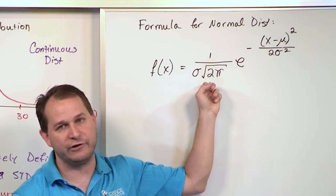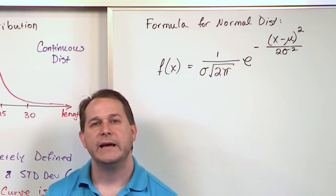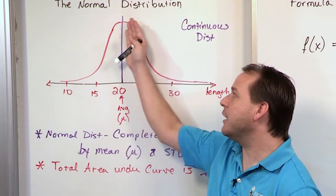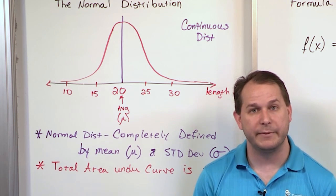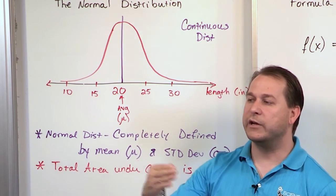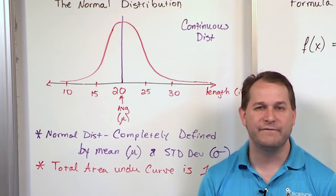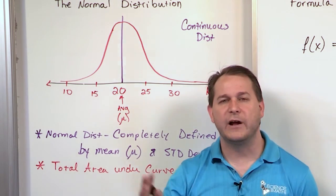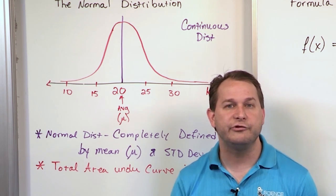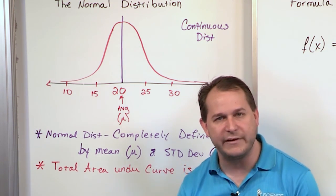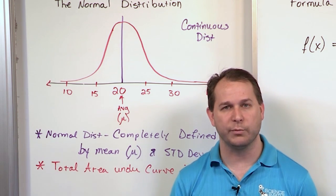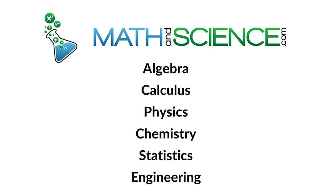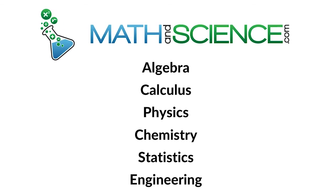So I'm showing you this equation mainly to open your eyes and show that it comes from somewhere, and to illustrate that the shape is completely locked down by the mean and standard deviation — change those values, and the shape changes, but it always looks bell-shaped. As we move forward, we'll use the concept of the normal distribution and find areas using the textbook tables. Follow me to the next section where I'll draw a few more pictures and show you how changing the mean and standard deviation changes the shape of the normal distribution.